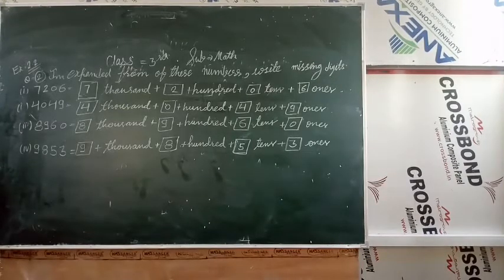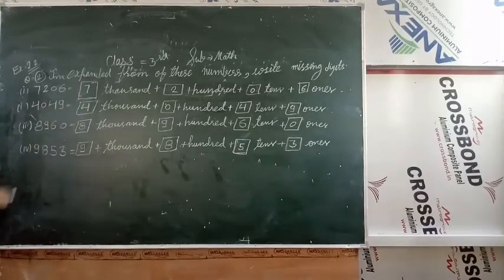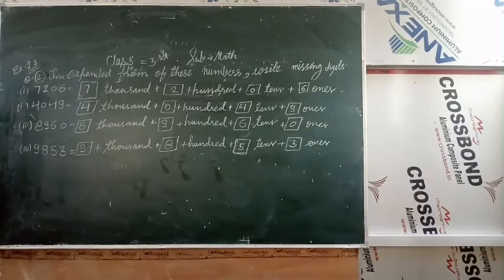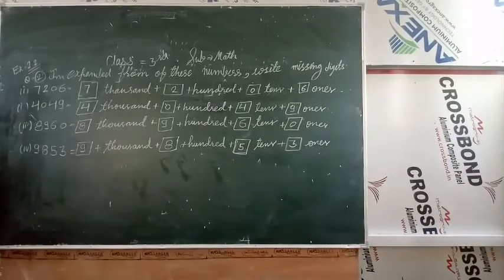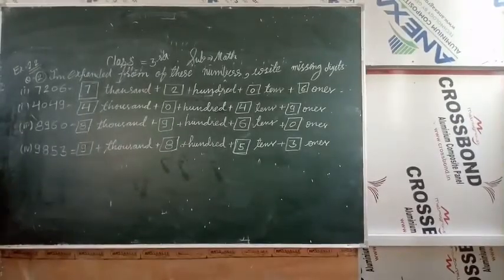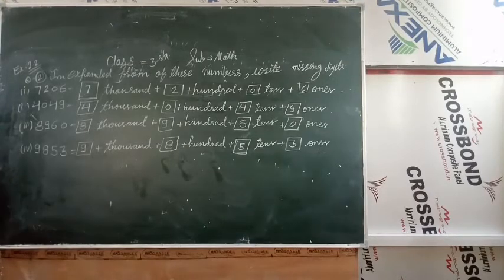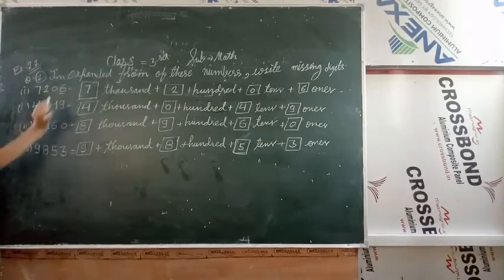Theek hai, jo number hai, jisme aapne four digit number hai, so hote hai thousand ki. Iske andar thousand, hundred, tens and ones hota hai. Four digit number mein hota hai thousand, hundred, tens and ones. So last digit hote hai ones ki, next column is tens, then hundreds, then thousands.